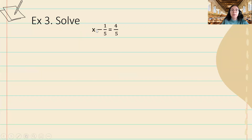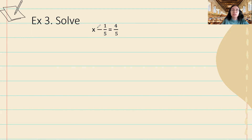In this example we are dealing with fractions, but it's exactly the same thing. We want to solve for x and get x by itself. Here we have x minus one-fifth is equal to four-fifths. I need to get rid of the minus one-fifth, so I'm going to use addition, because addition is the inverse operation of subtraction. I'm going to add one-fifth to both sides.